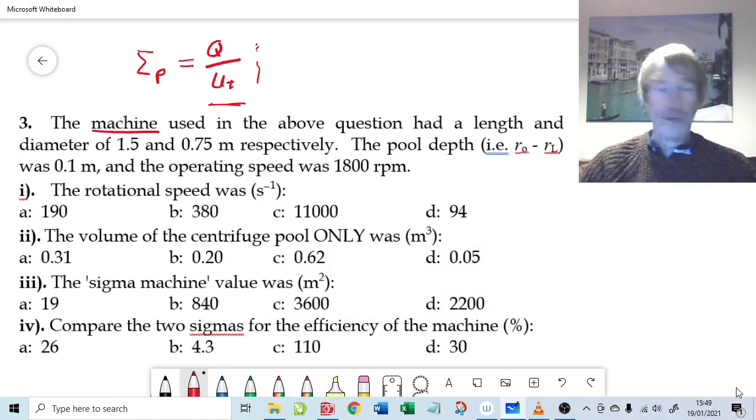So let's do some calculations. Again, it starts fairly straightforwardly because we're told that the centrifuge is operating at 1800 rpm and we need to convert that into a rotational speed. So we need to divide by 60, that's revolutions per minute, so we need 1800 rpm. We need a revolution which is 2π, so that's 1800 times by 2 times by 3.14, and then divide by 60.